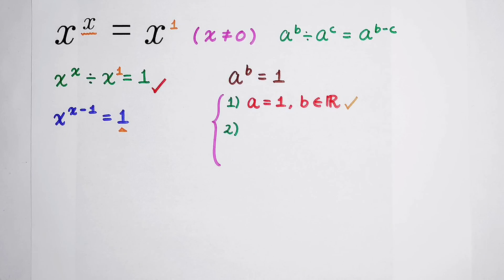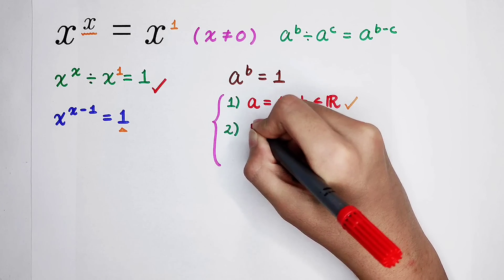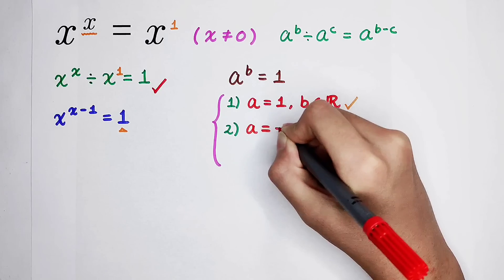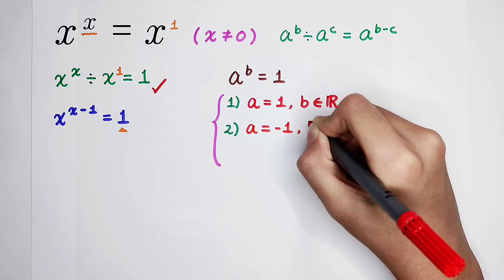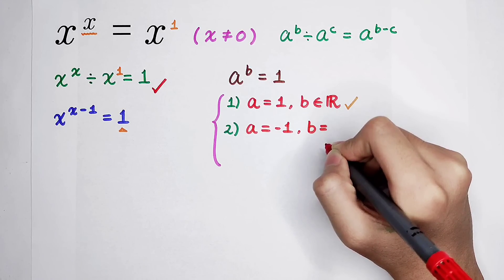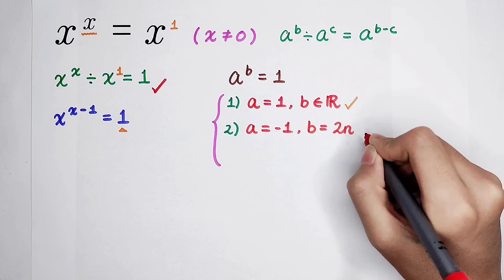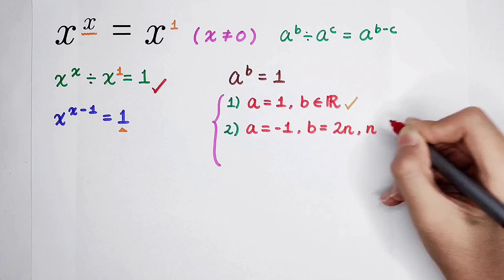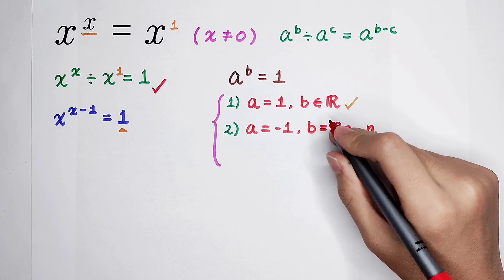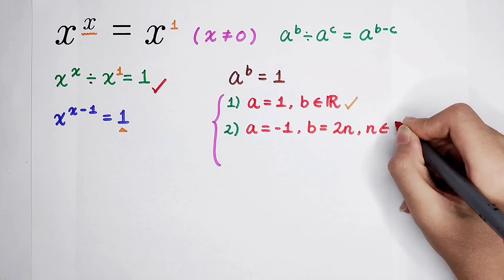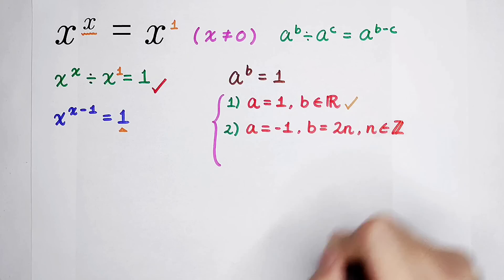We have also the second case. Negative 1 to the power of any even number will become 1. So in the second case, if a is equal to negative 1, and now, what about b? b is an even number. It can be written as the form 2 times n, where n is an integer.